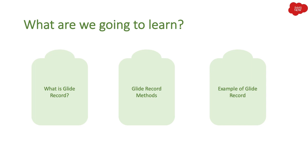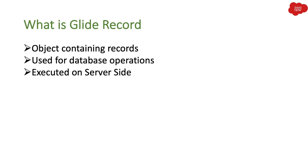GlideRecord is an object containing records. It is used for database operations, and the important part is that it is executed on the server-side. So if you remember, you can run code on the client-side or server-side, but GlideRecord should be executed on the server-side.